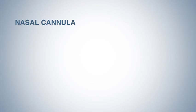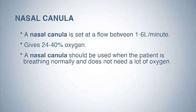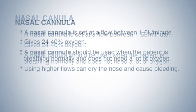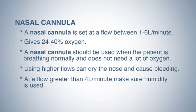The first oxygen therapy device is the nasal cannula. A nasal cannula is set at a flow between one and six liters per minute and gives 24 to 40 percent oxygen. It should be used when the patient is breathing normally and does not need a lot of oxygen. Using higher flows can dry the nose and cause bleeding. At a flow greater than four liters per minute, make sure humidity is used.